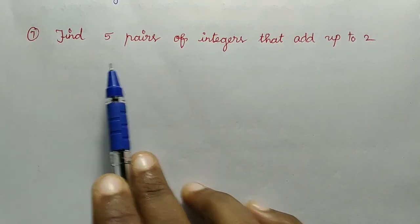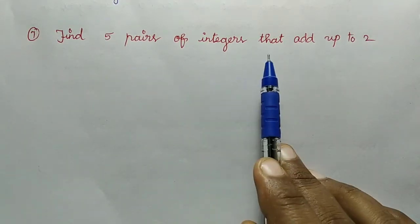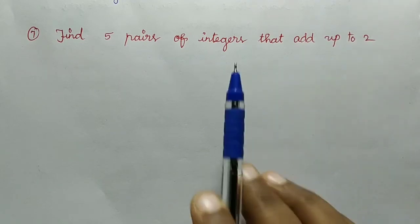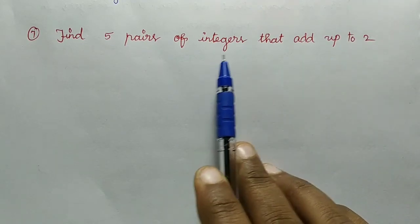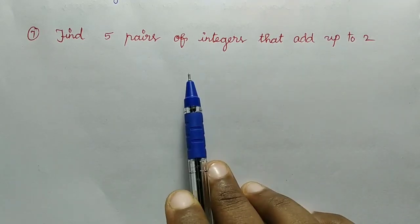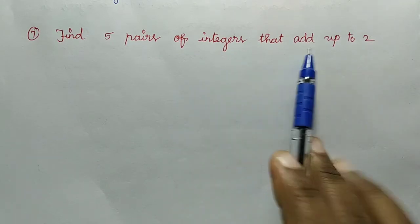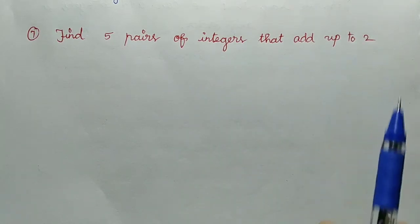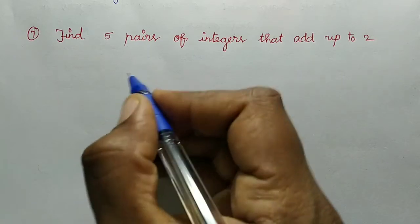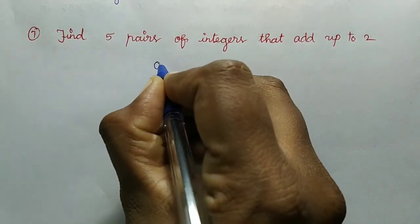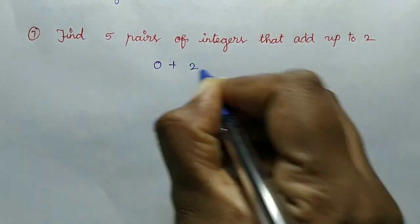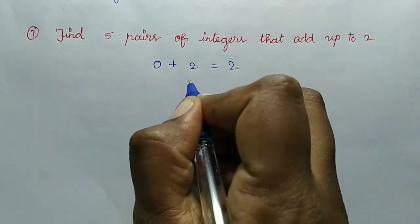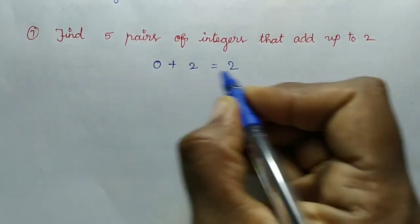Then question number 7: find 5 pairs of integers that add up to 2. So here we find 5 pairs of integers whose sum is 2. First pair: 0 plus 2 equals 2, so 0 and 2 add up to 2.